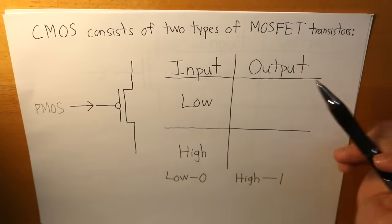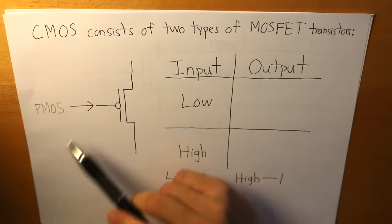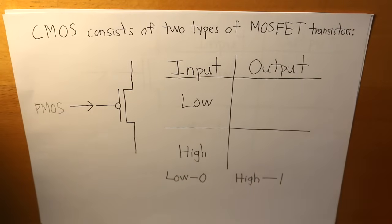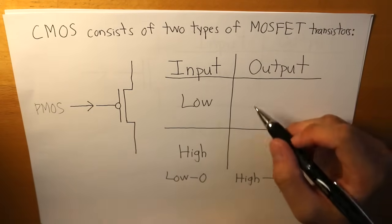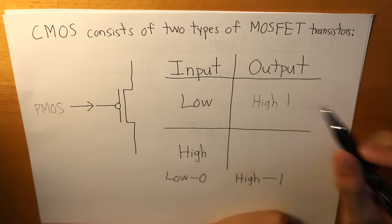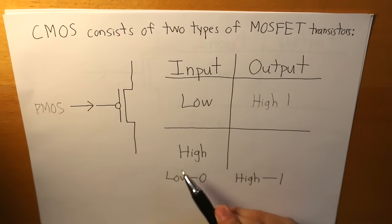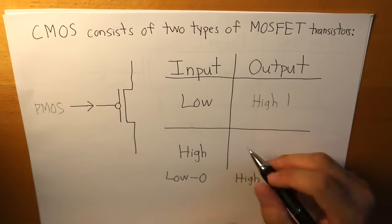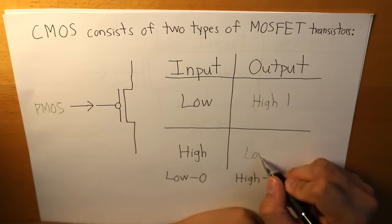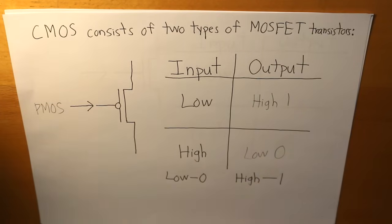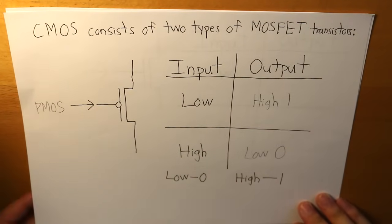And for this PMOS, when we input something low it's going to give us the opposite result which is high. Respectively, if we have an input that is high then the output is going to be low. And that's how it goes for a PMOS, and that's our first MOSFET transistor that covers half of our CMOS.